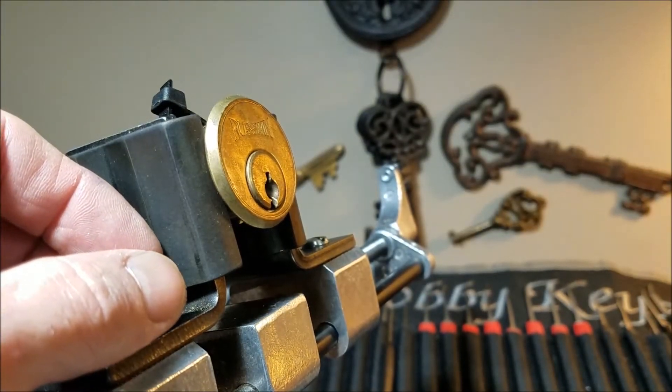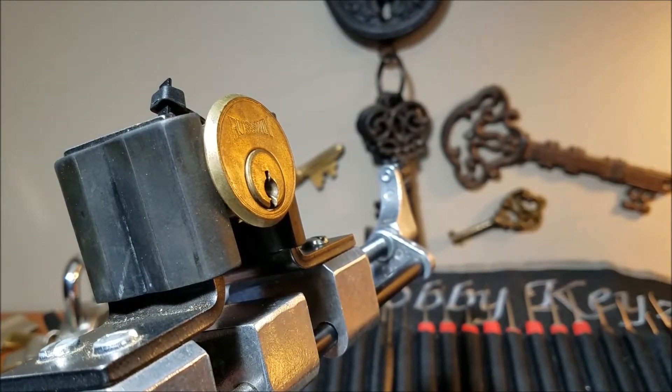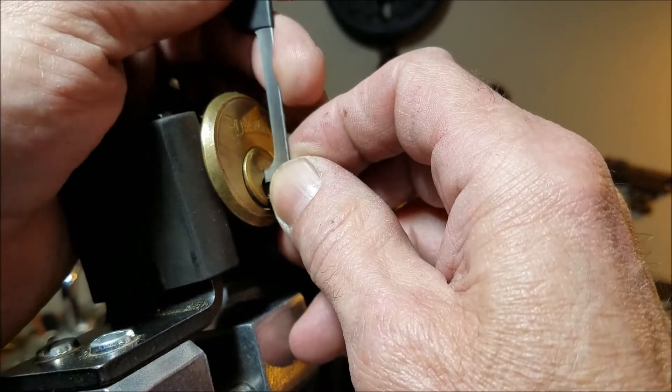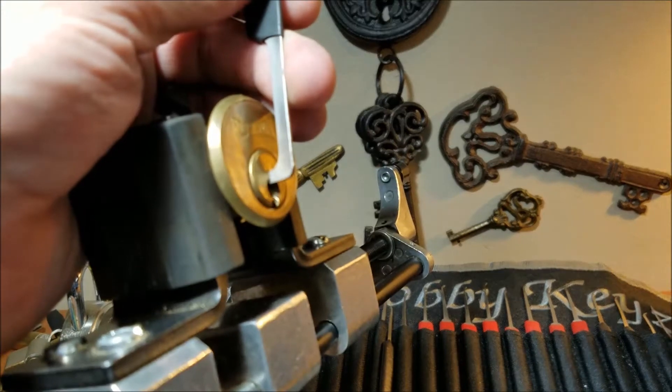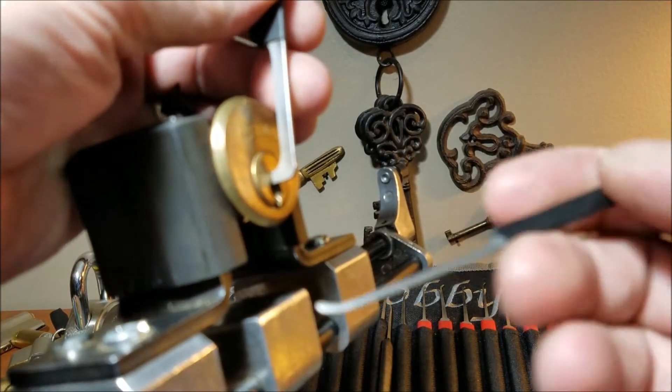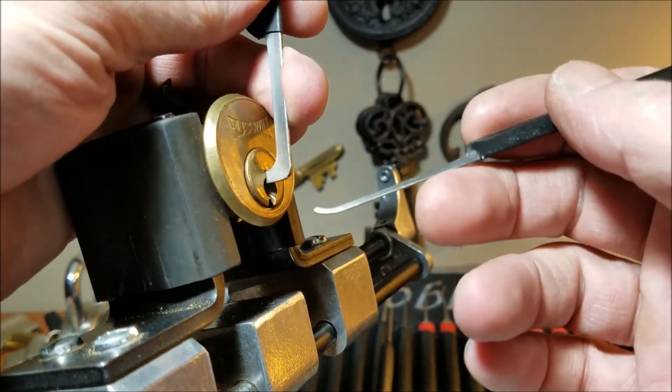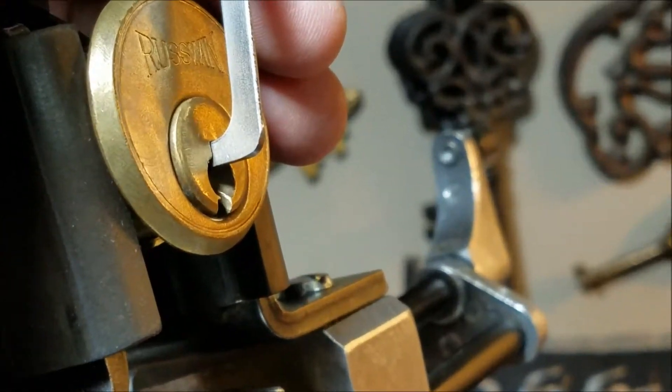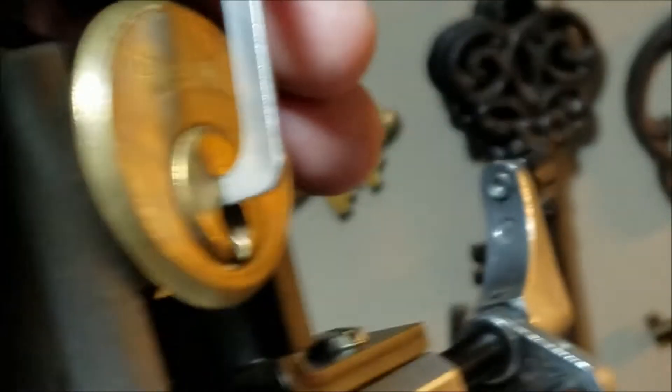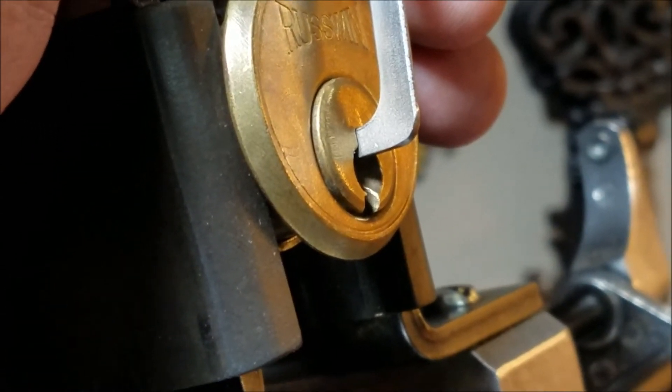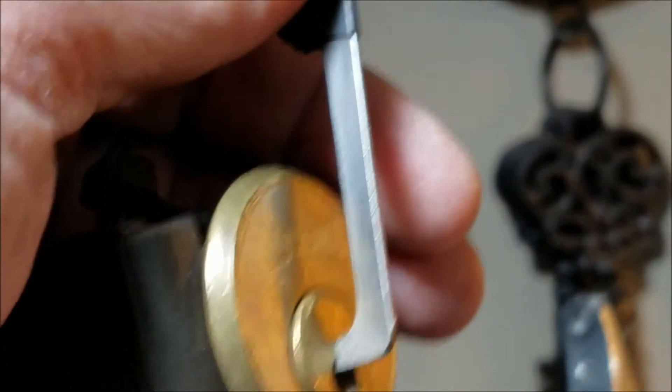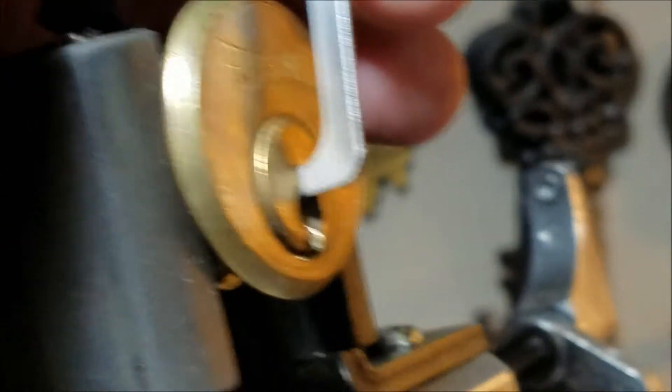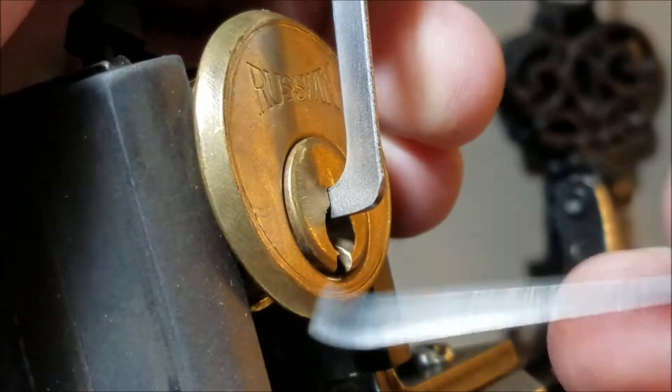We will see if we can get into this lock, and I will open it up for us. I'm going to use this tension wrench at the top of the keyway. I'm actually going to use this gem here that Trekmaster made and sent me. Thank you for this pick, Trekmaster. Let me zoom this in and get a better look. I think I will focus this on the lock this time so we don't come out of focus. Let's see what he has in here.